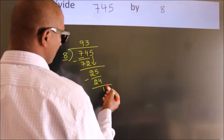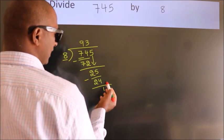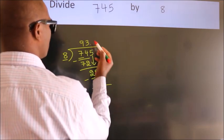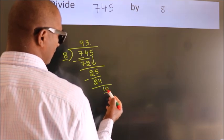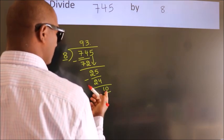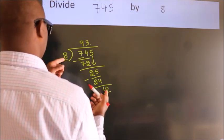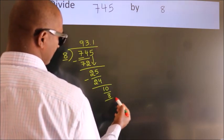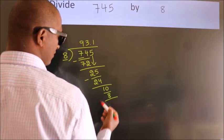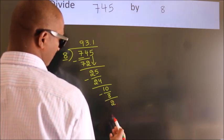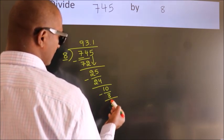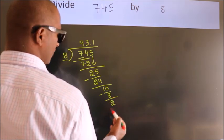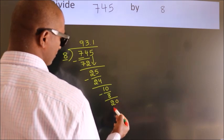After this, no more numbers to bring down. We already have the decimal. So, directly take 0. So, 40.